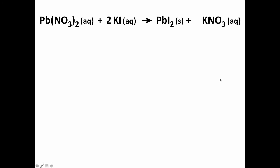And then we also note that what we started with was lead associated with nitrate and potassium associated with iodide. And after the reaction is complete, the lead is associated with the iodide and the potassium is associated with the nitrate. So, in other words, these two substances kind of switched partners.